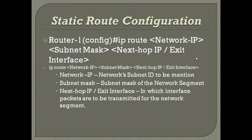If we know the next-hop IP address, we can directly set the next-hop IP address. Or if we don't know, we can just set the exit interface, such as FastEthernet 0/1, GigabitEthernet, serial interface, or tunnel interface — whatever it may be. We just configure it and automatically it will be implemented in the routing table.